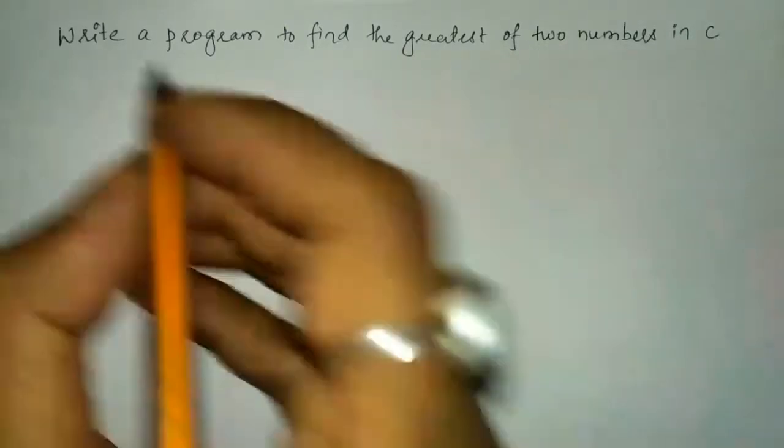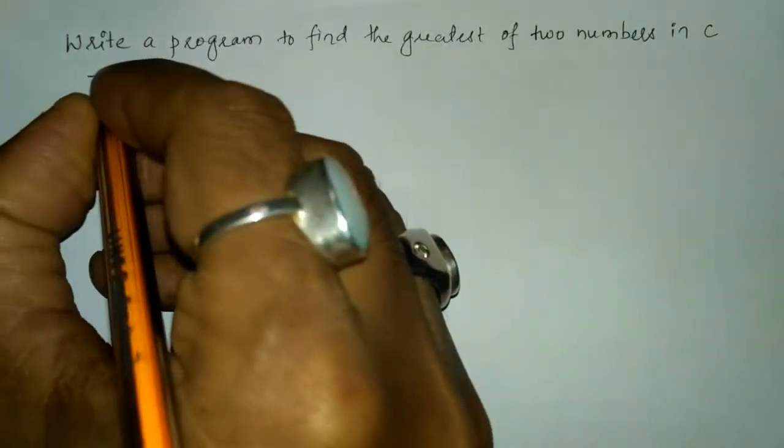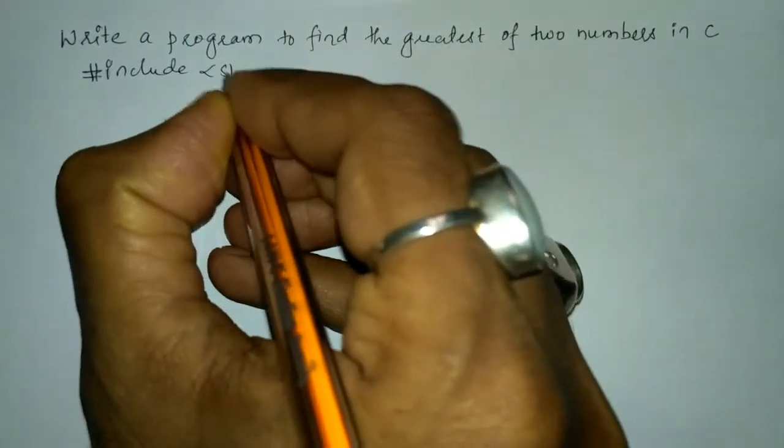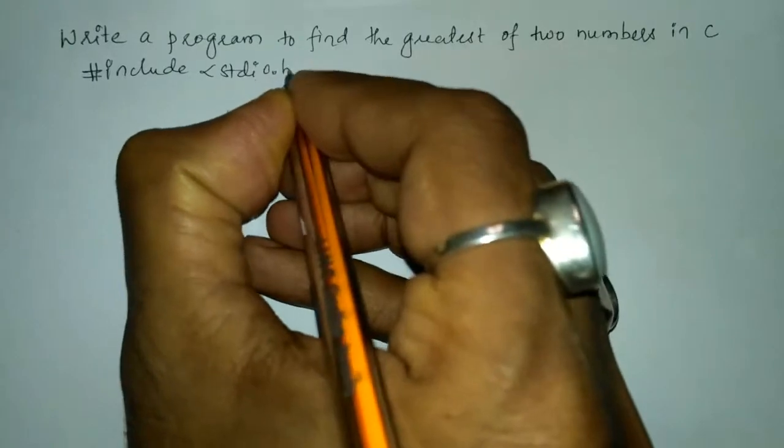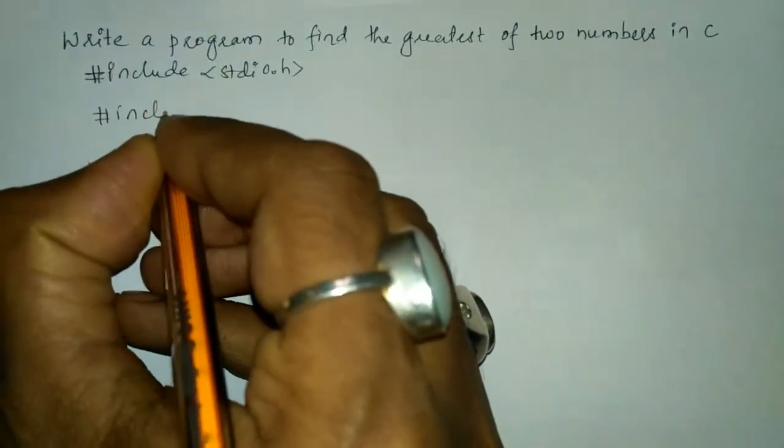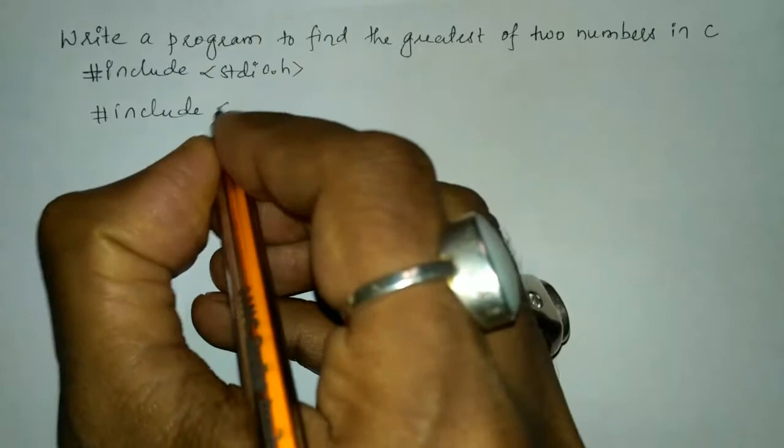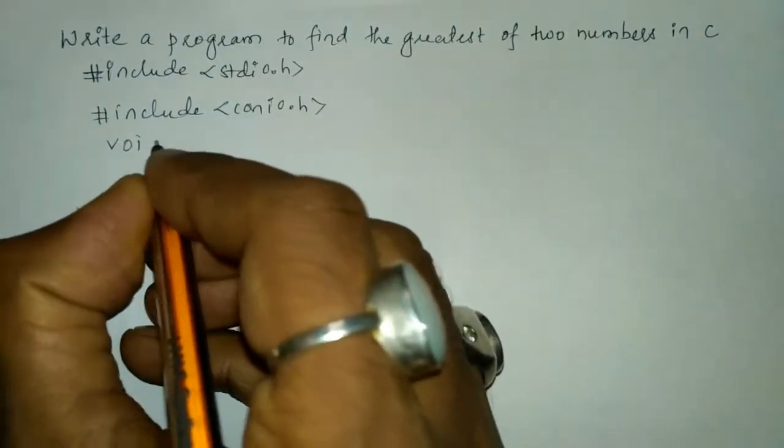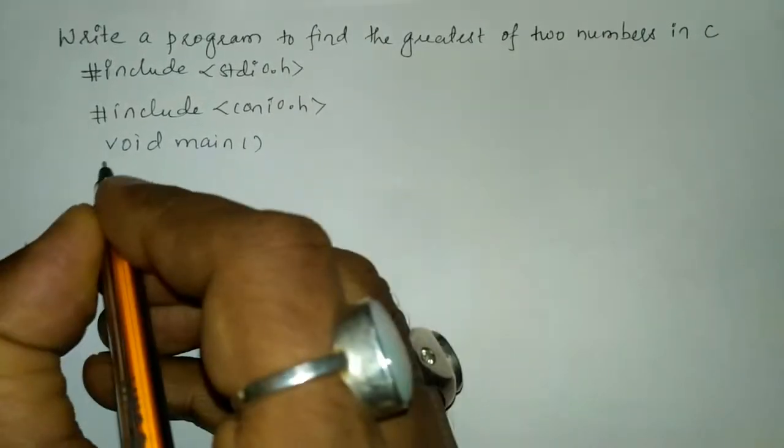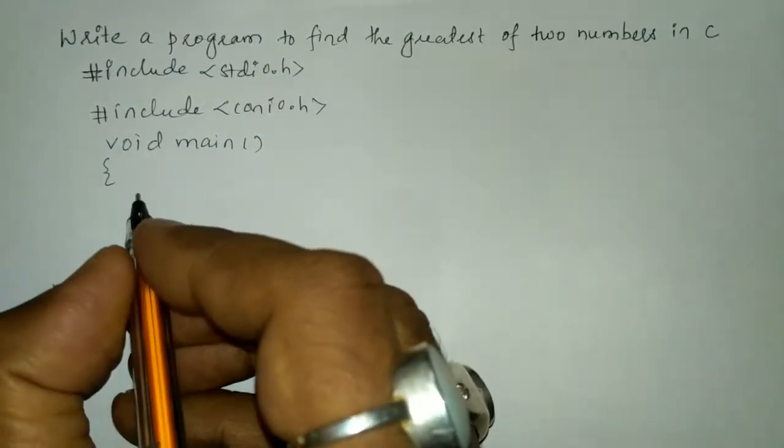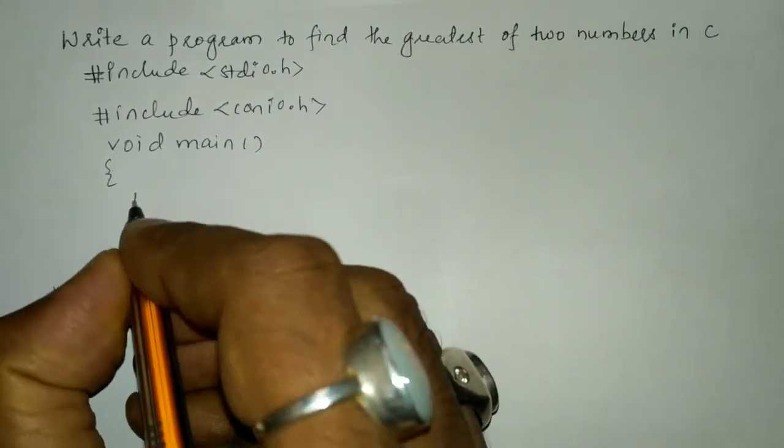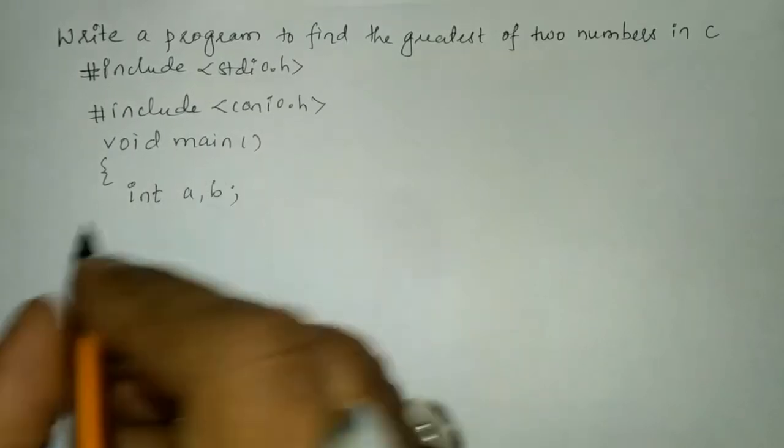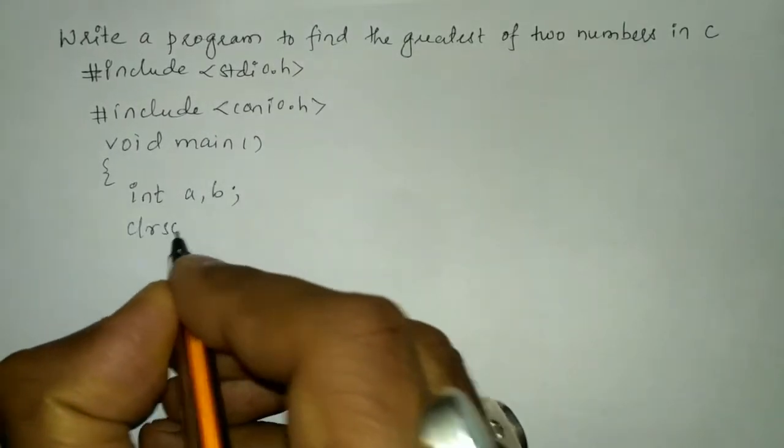Let us write the preprocessor directives hash include stdio.h hash include conio.h void main function curly open brace and here I am going to declare two variables of type integer int a comma b clrscr.